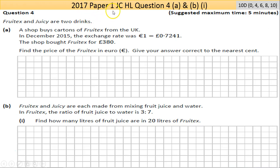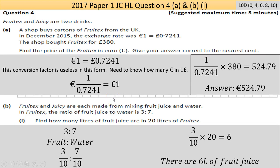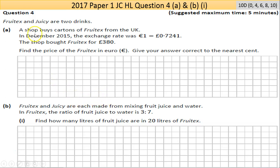Welcome to the 2017 Paper 1 of the Junior Cert Higher Level, Question 4. Cards on the table — I do not like this question, it's very very tricky especially the last part, but this is on the Junior Cert so it's tough. There are a lot of parts here. You've got two drinks, Fruitex and Juicy. I'd suggest you try these questions yourself. If you want the set of notes, the screen-grabbed question and answer, just email me at shanethry@gmail.com.